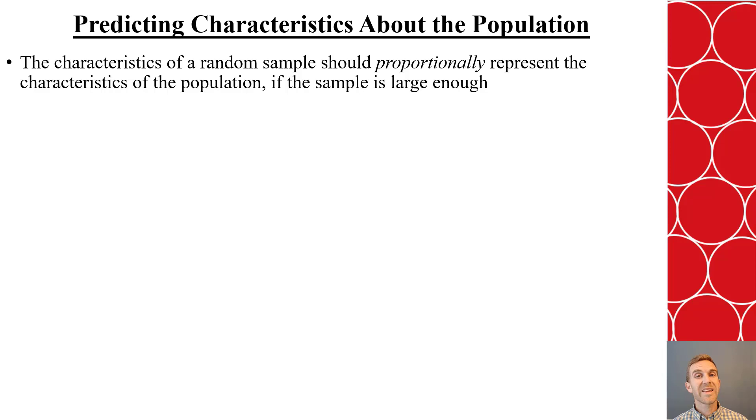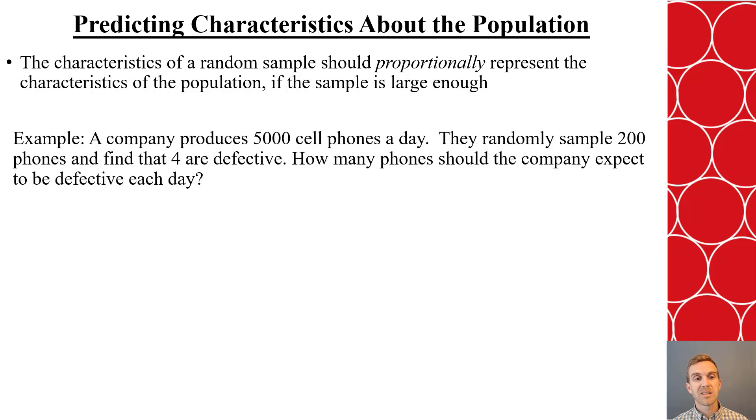Now, we care so much about the random sampling because those characteristics should represent our population proportionally as long as our sample is large enough. However, if we have a convenient sample, this will not necessarily be true. So, what does this mean? Say we have a company that produces 5,000 cell phones a day. They randomly sample 200 phones and find that 4 are defective. How many phones should the company expect to be defective each day? Because they're using a random sample, they can apply this to the population.